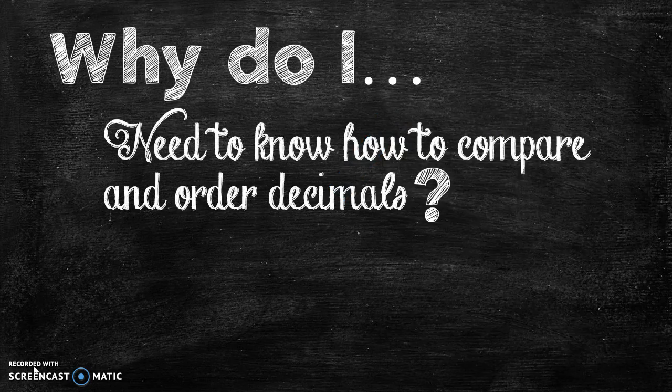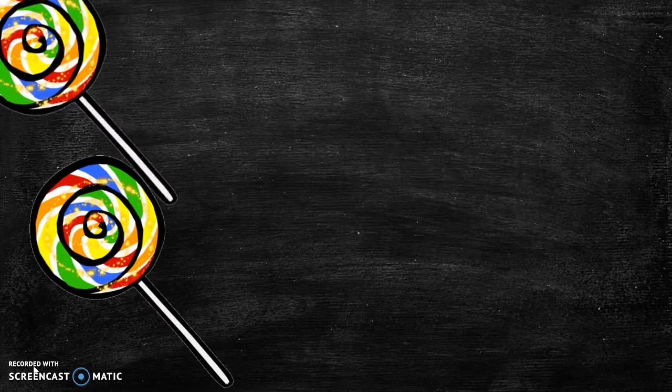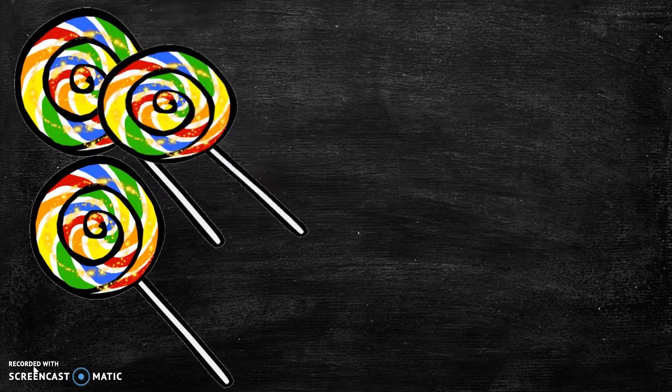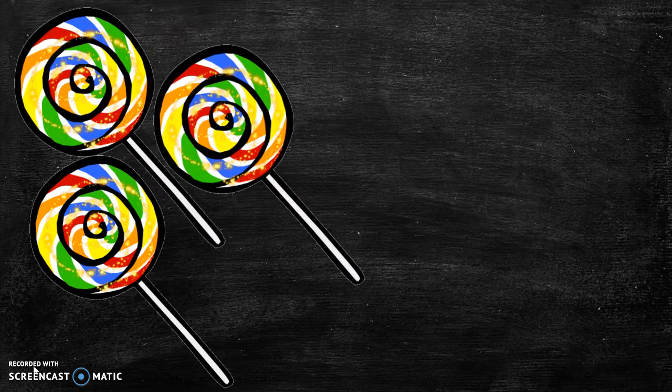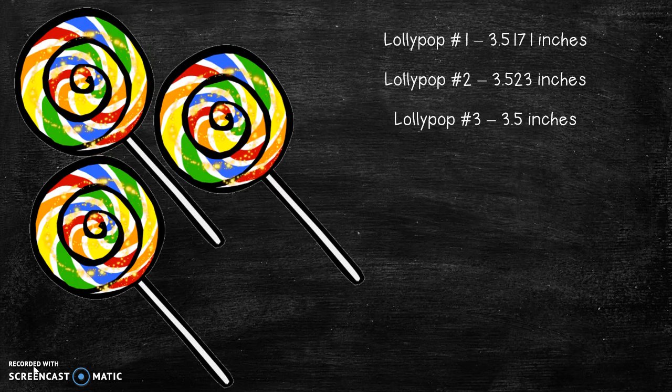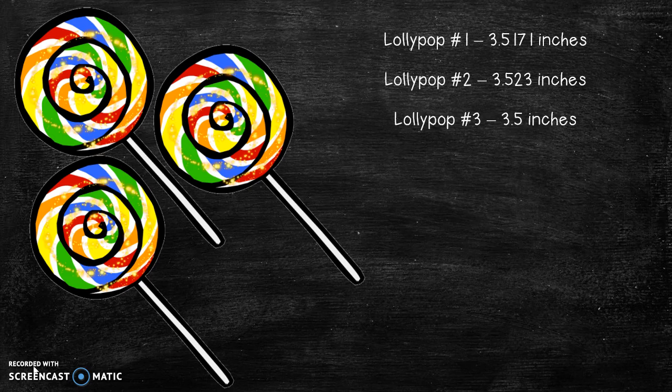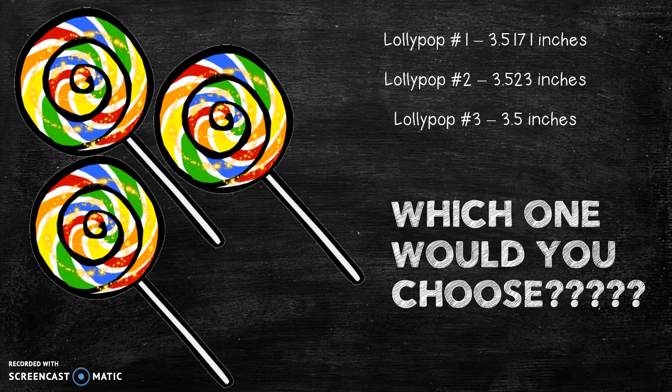So why in the world do you need to know how to compare and order decimals anyway? Well just imagine your mom brings home three lollipops that you need to split with a friend. And you kind of always want to make sure you have the biggest lollipop. But you don't know how to compare them because they're all in wrappers and it's hard to put them on top of each other. So instead you know that each lollipop is a different amount of inches in diameter. But you want the big one, so how are you gonna know? Which one would you choose?